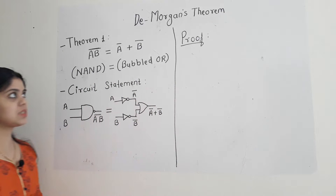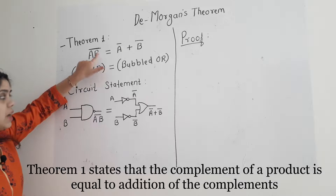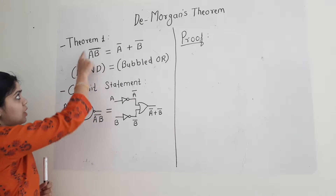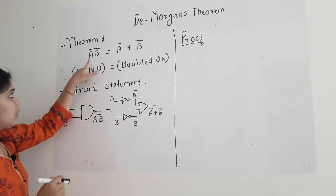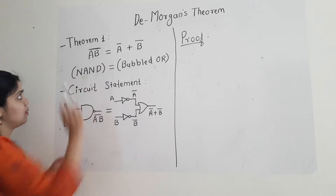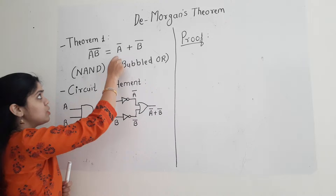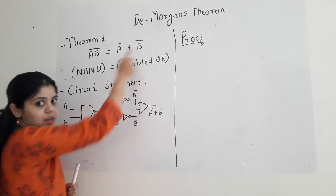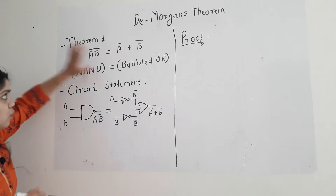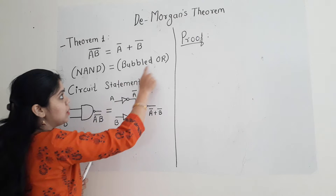We will see what this DeMorgan's theorem says. The DeMorgan's theorem states that the complement of the product is equal to the addition of the complements, which means that if you observe the left hand side, there are two variables A and B which have been multiplied and a complement has been taken. That should be equal to two variables which have been complemented and then added. If you observe the left hand side, this becomes a NAND gate, whereas these are nothing but two inputs which are ORed — so it becomes a bubbled OR.